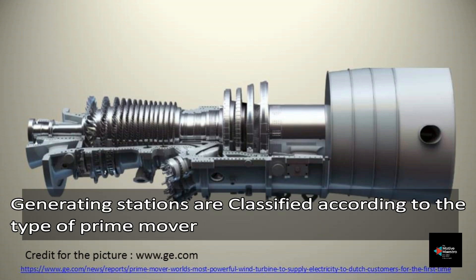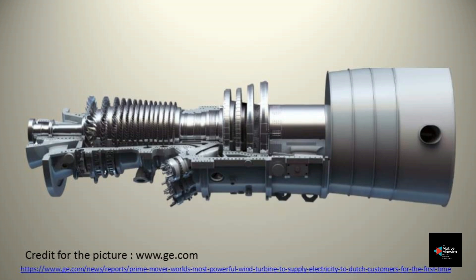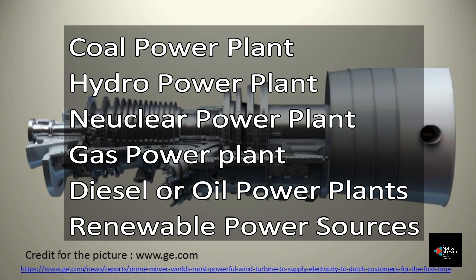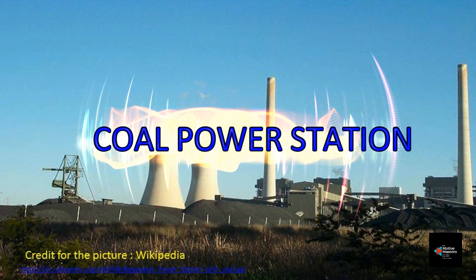In all power stations, power is generated by rotation of the prime mover of an alternator. A power generating station is classified depending upon the type of prime mover. Power around the world is majorly produced by coal power plants, hydro power plants, nuclear power plants, gas power plants, diesel or oil power plants, and renewable power sources.